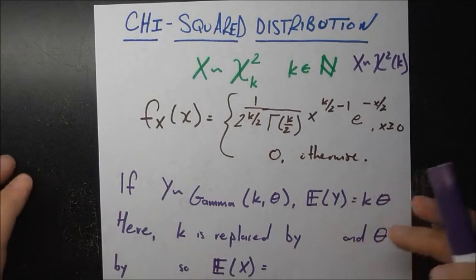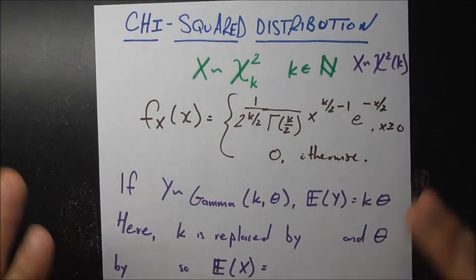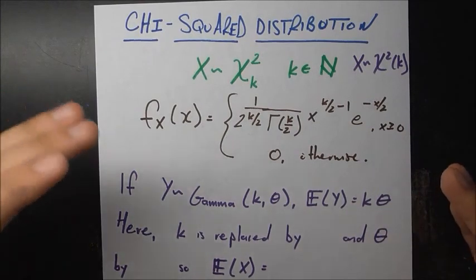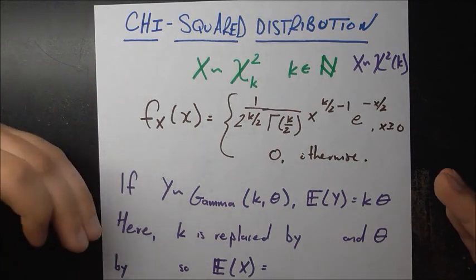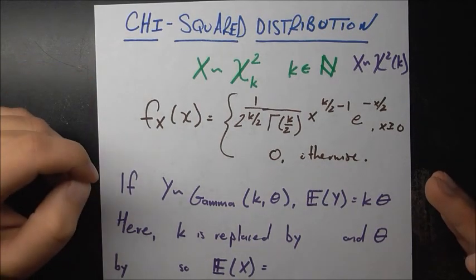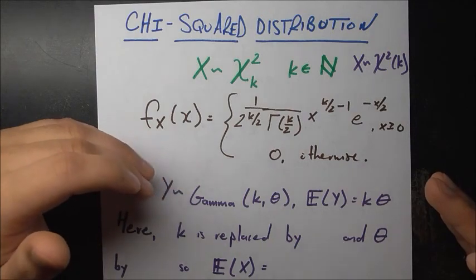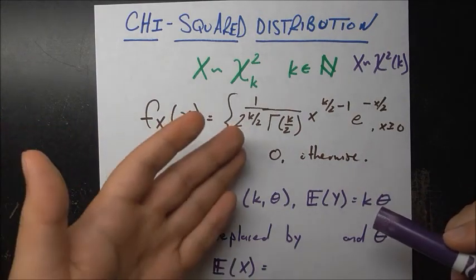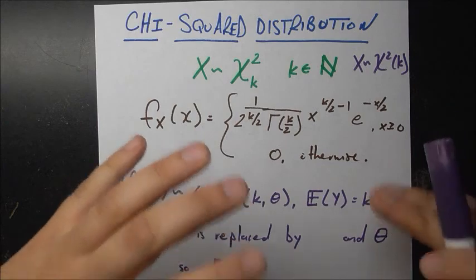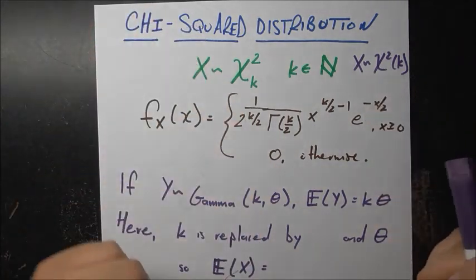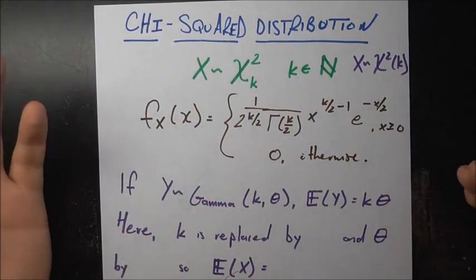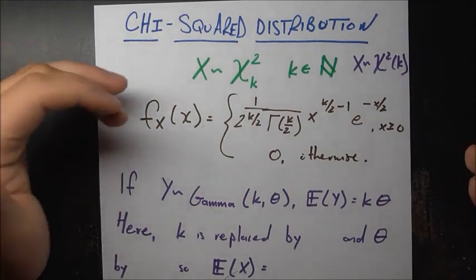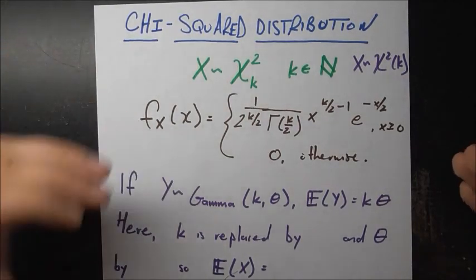Just to recap and make this very clear — because this is the key insight we'll use to find the expected value, variance, and MGF in a very short amount of time — all we did was take the gamma distribution and let k/2 stand in for k, and give theta the concrete value of 2. Doing those substitutions gives us exactly the chi-squared distribution.